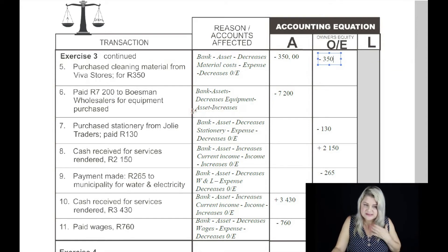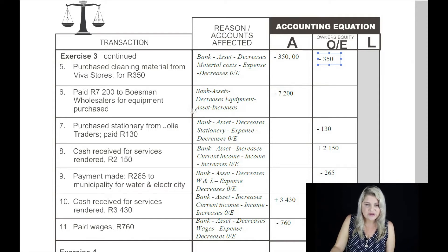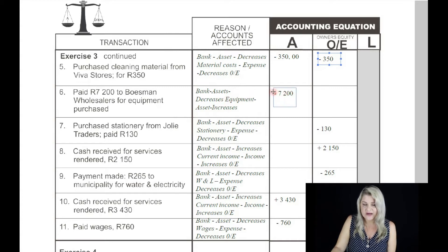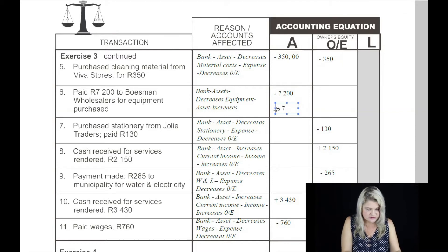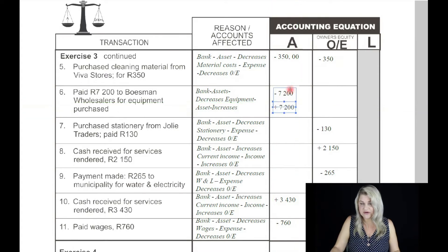The sixth transaction: paid 7,200 Rand to Busman wholesalers for equipment purchased. The two accounts will be bank and equipment — those are two asset accounts. One asset decreases and the other one increases. Bank is decreasing and equipment is increasing by the same amount of 7,200 Rand. The overall effect is zero because we are swapping one asset for another asset.